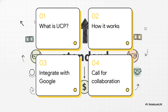Here's our game plan. We're going to start with the basics: what exactly is UCP and what problem is it trying to solve? Then we'll walk through a step-by-step example to see how it works in the real world. We'll also take a look at how a huge player like Google is already putting it to use. And finally, we'll talk about how this open project is inviting you, and everyone, to help build the future of commerce.